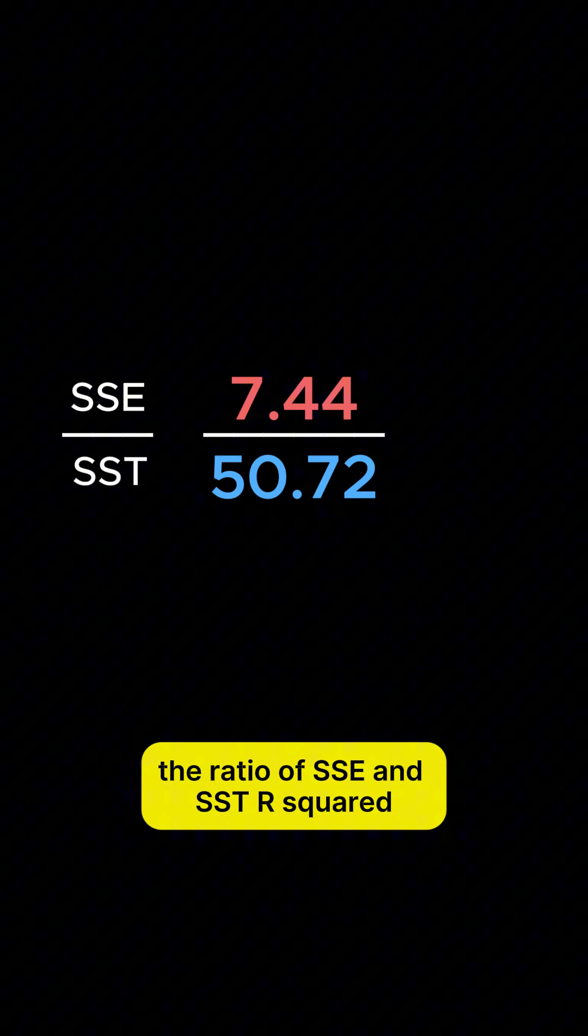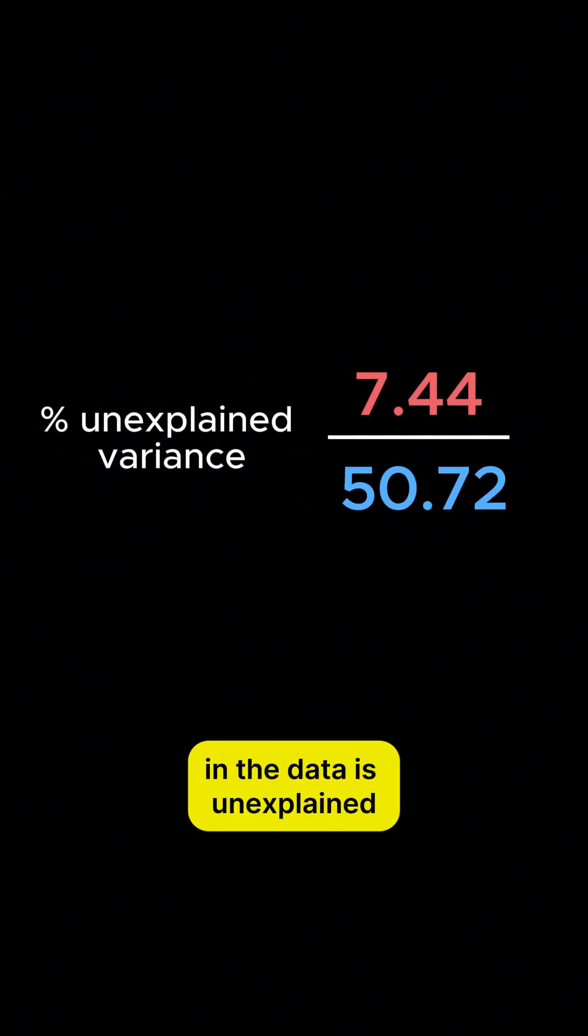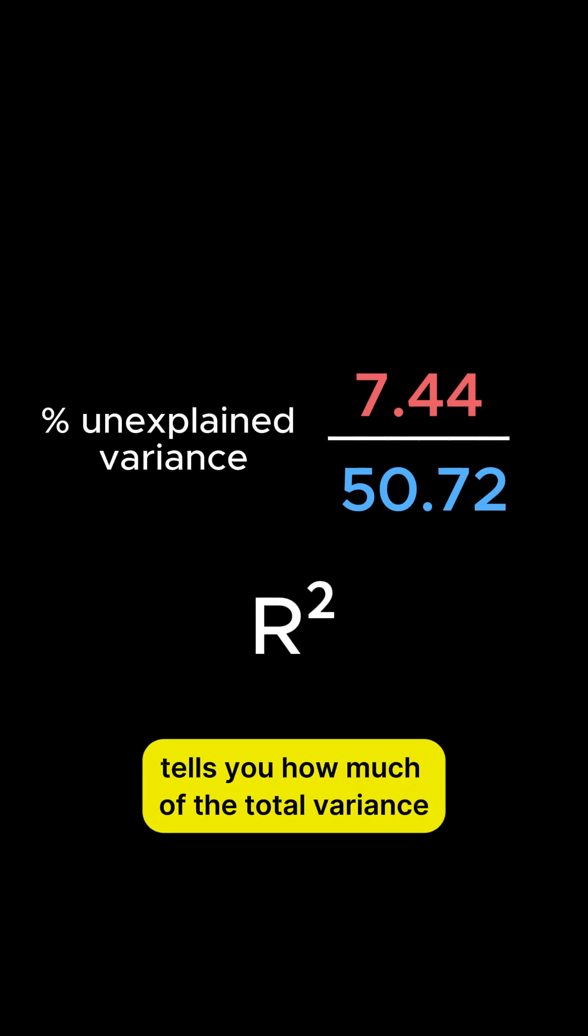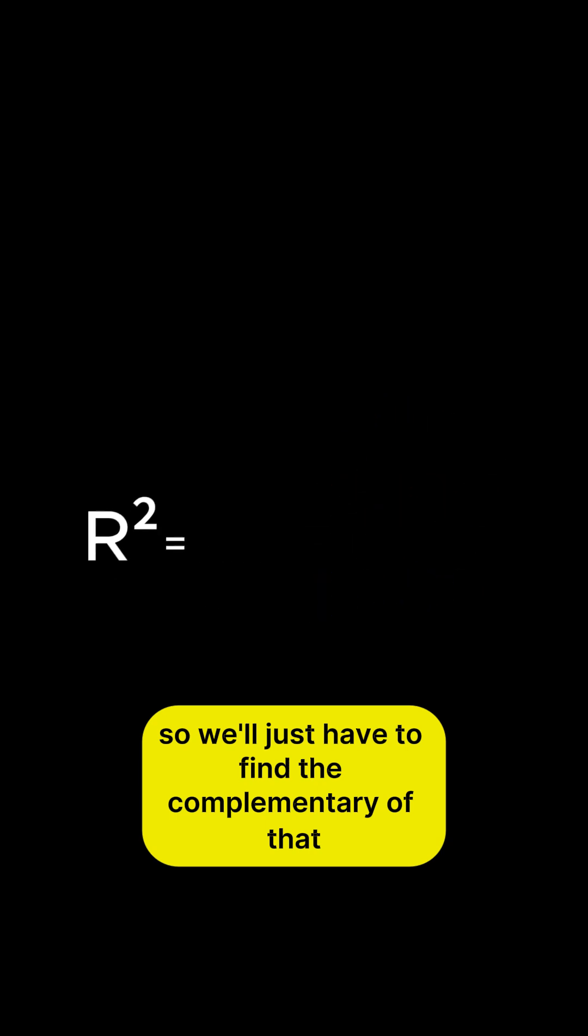The ratio of SSE and SST gives you how much of the total variance in the data is unexplained by the model. But the R-square tells you how much of the total variance in the data is explained by the model. So we'll just have to find the complementary of that.